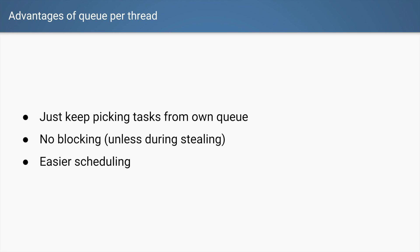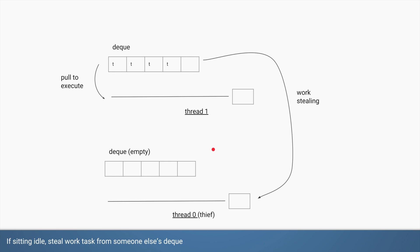Every thread in the fork join pool has its own double-ended queue to store the subtasks it creates. You don't have to worry about getting tasks from the external queue — you keep picking from your local queue and keep executing. Since you are only touching your own queue, you generally don't need to worry about synchronization, except for a corner case we'll discuss later. Since threads stay busy, there are fewer context switches.